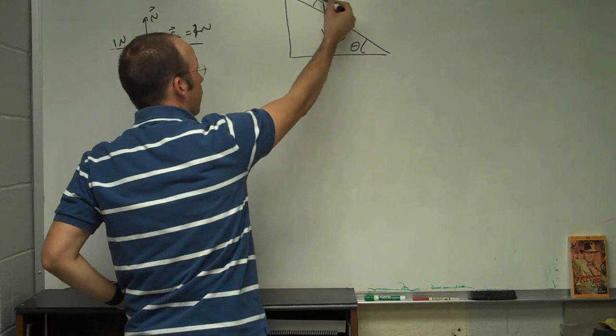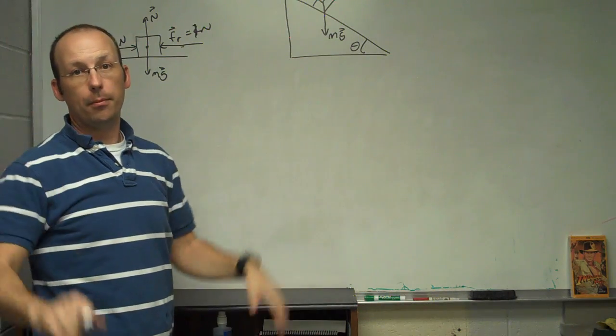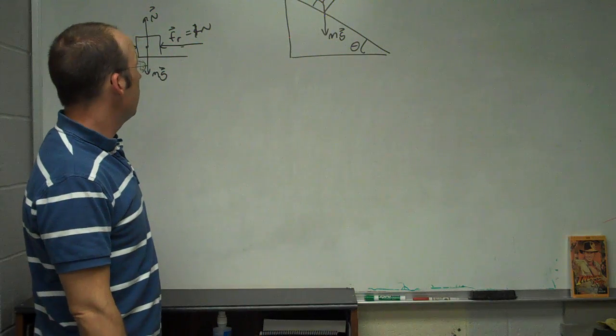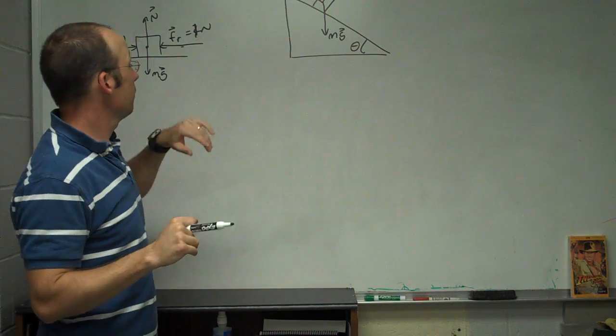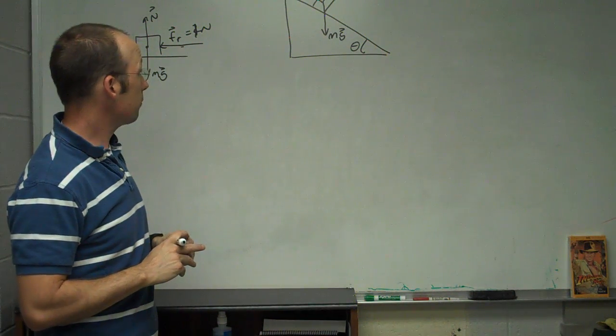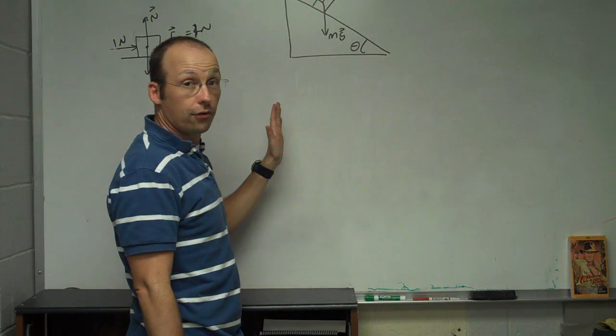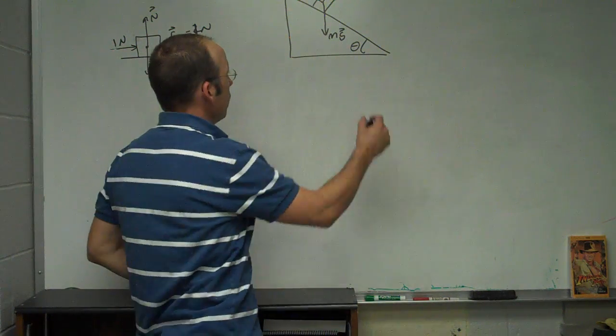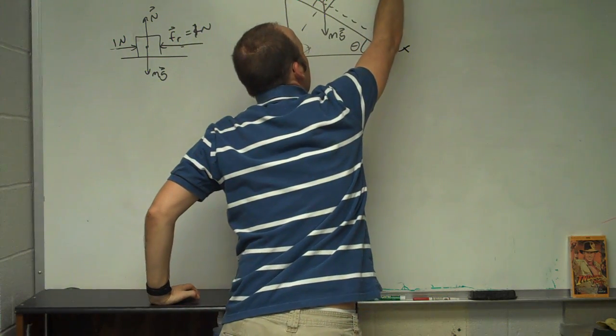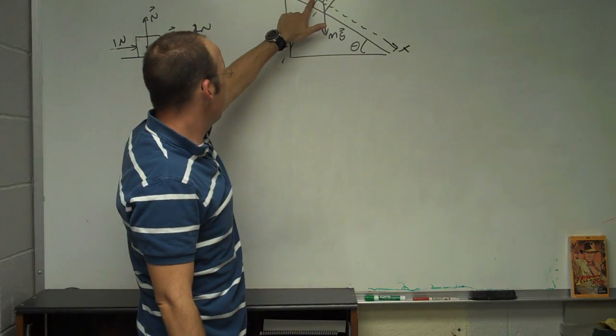So friction in this case would act parallel to the plane and in this direction to make the net force zero. Friction is like the peacemaker. What do I need to do to make you not move? It does whatever it needs to do up to a point. Okay, now I want to solve for this. So I have a force diagram. The next thing to do is to choose a coordinate system. You could choose x-axis like this and y-axis like that, and that's fine, it would work. But I'm going to choose this as my x-axis and that as my y.